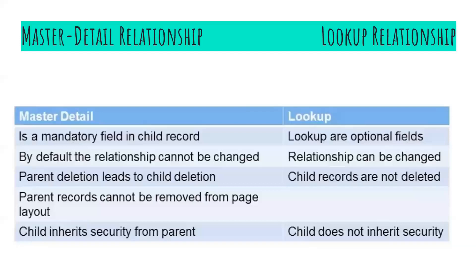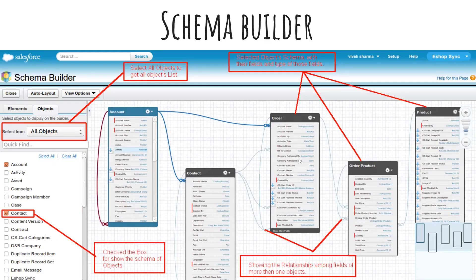In a master-detail relationship, the child inherits security from the parent — meaning whatever access or security you provide to the master object is also given to the child object. This does not happen in a lookup relationship; the child does not inherit the parent's security. You can convert a master-detail to a lookup relationship as long as no roll-up summary field exists on the master. You can also convert a lookup to a master-detail relationship, but only if the lookup field in all records contains a value.